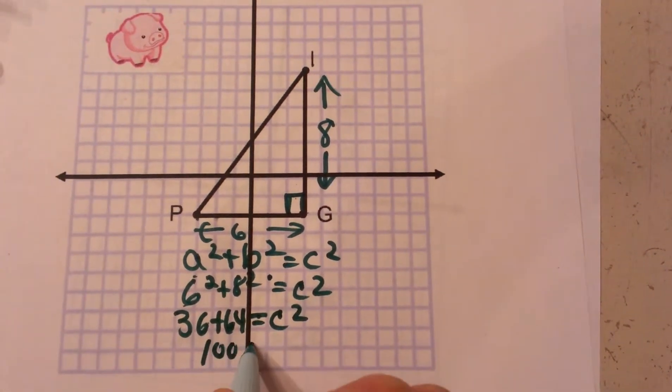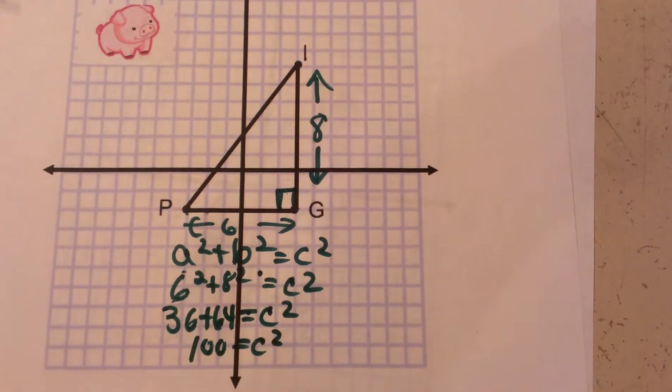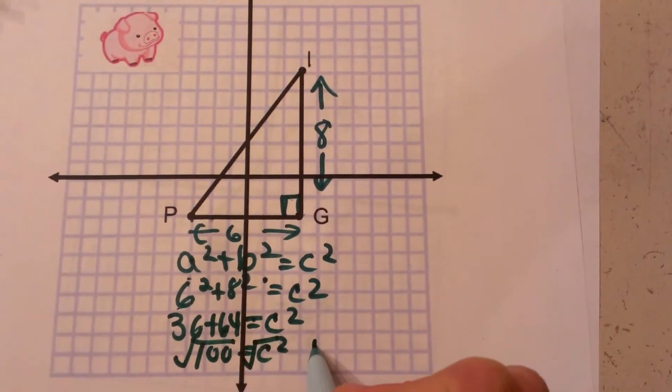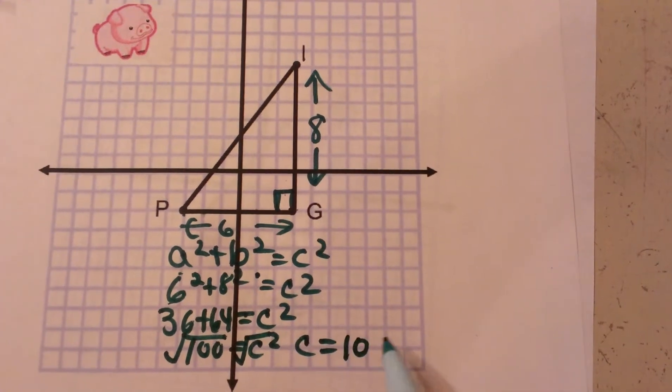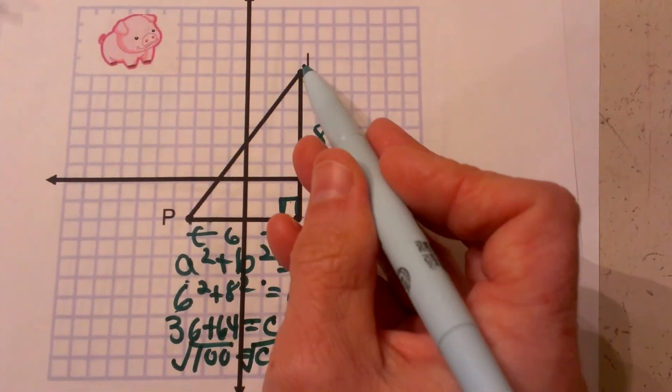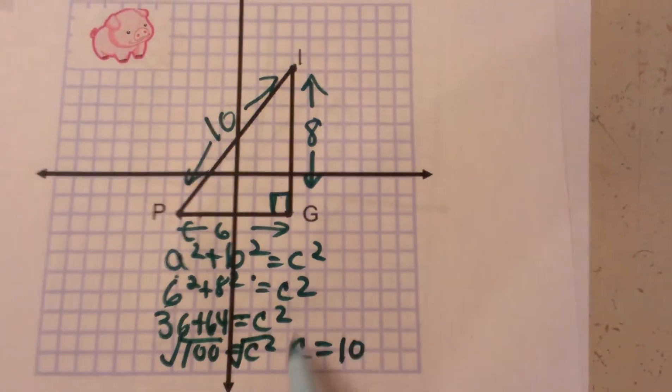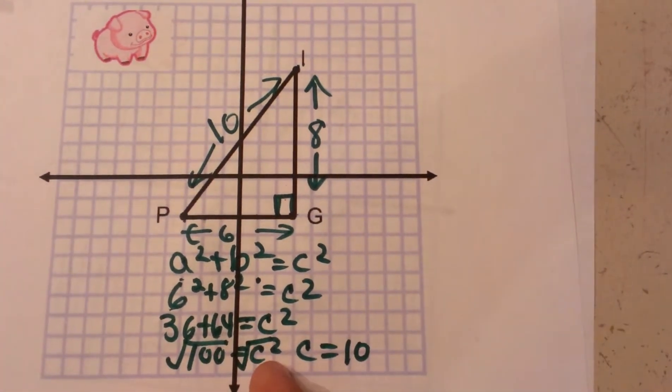So that is 100 equals C squared. And then to undo a square we take the square root of both sides. So C has to be 10. That means our side PI measures 10. Not all of them will come out nice and neatly like that, but this one did.